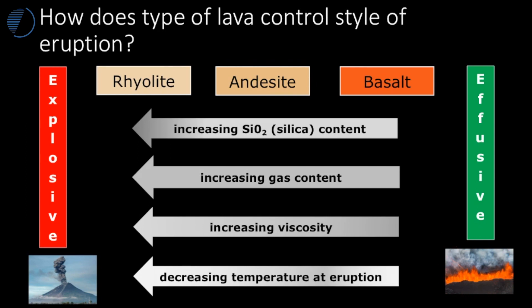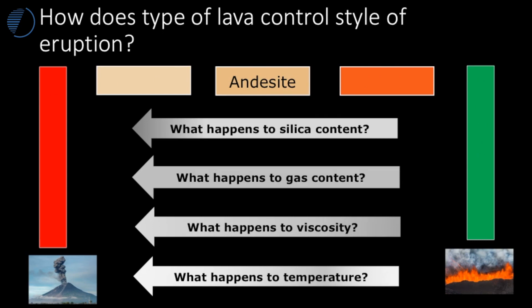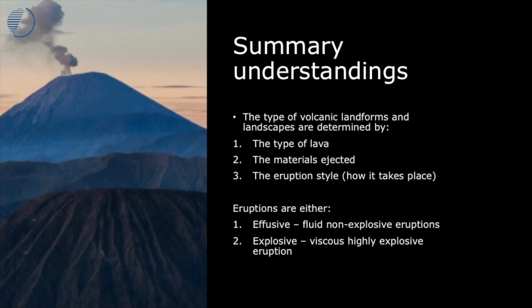Here is your summary. At one end we have eruptions like those on Iceland; at the other we have eruptions like those on the island of Sumatra, such as Mount Sinabung. Explosive eruptions have magma that is typically rhyolitic — with high silica content, high gas content, high viscosity, but low temperature. At the other end, basalt has low silica content, low gas content, low viscosity, and high temperature, erupting at around 1,000 degrees.